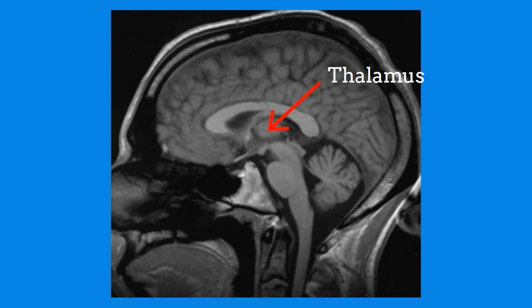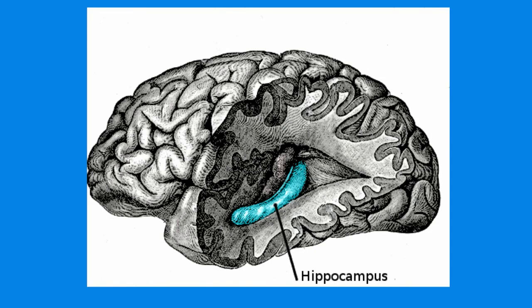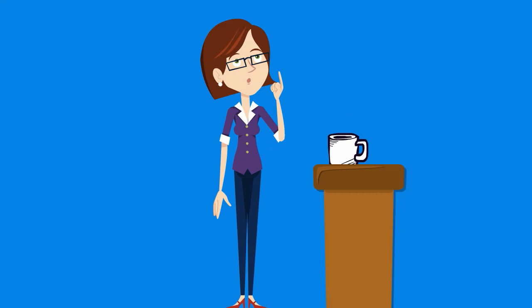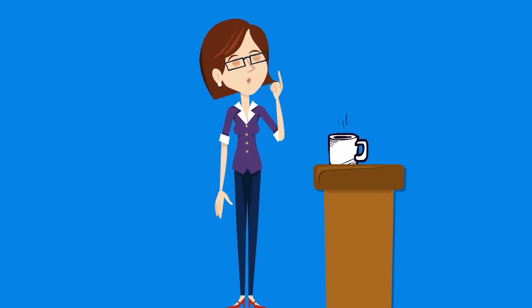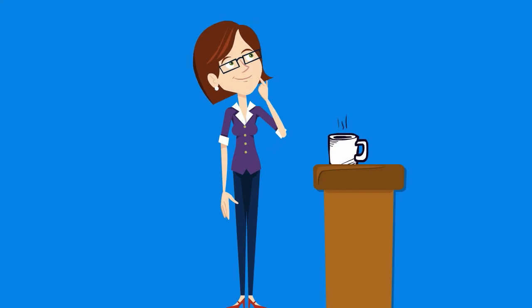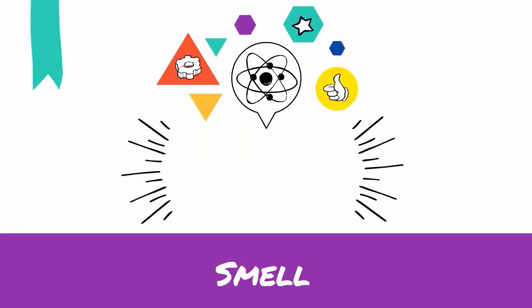The thalamus transmits some of this smell information to the hippocampus, which is a key brain region involved in learning and memory. This explains why some smells bring back vivid memories whenever you encounter them.